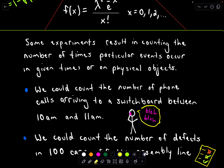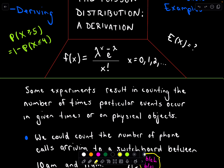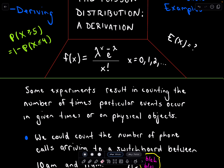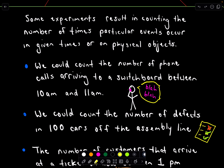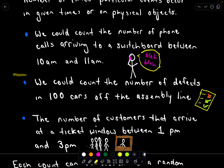So what is the Poisson distribution? The idea is that some experiments result in counting the number of times particular events occur in given times or on physical objects. For example, we could count the number of phone calls arriving to a switchboard between 10 a.m. and 11 a.m. Or in manufacturing, you might count the number of defects in the next 100 cars that come off the assembly line.